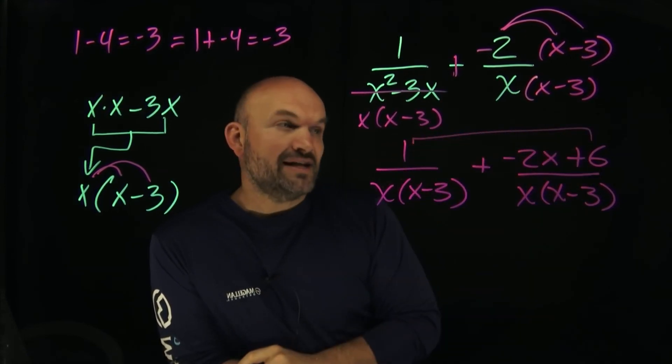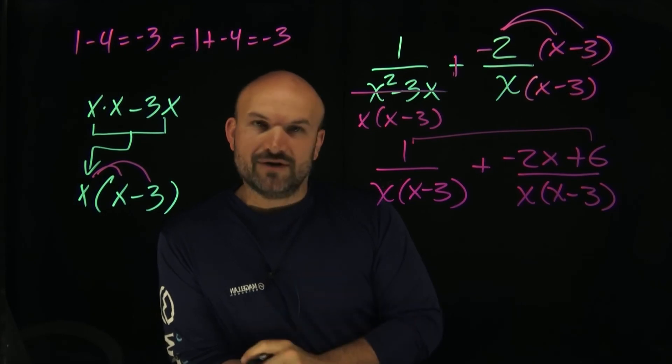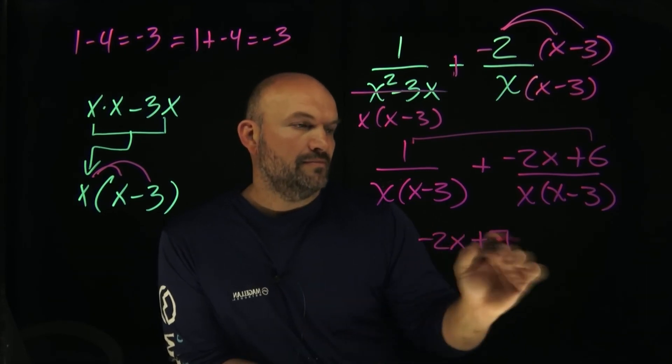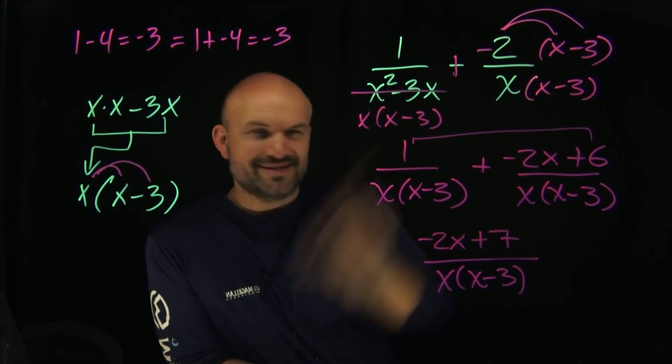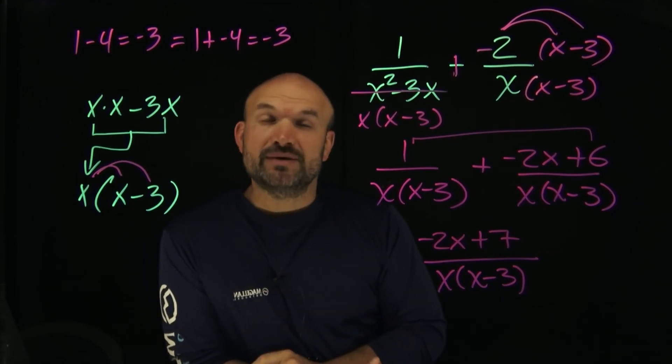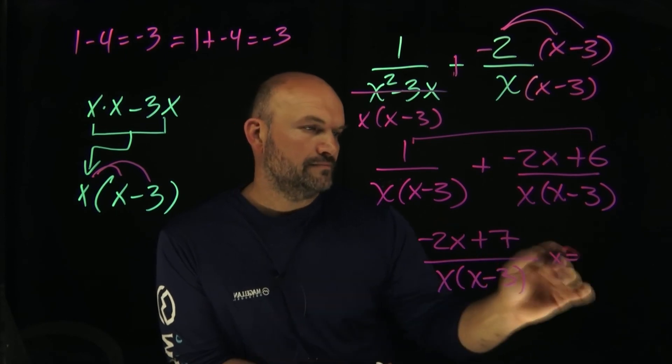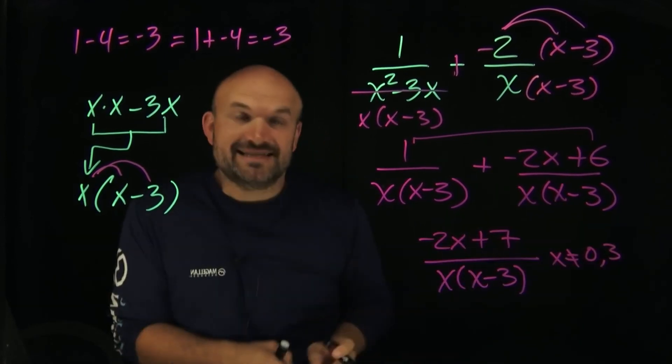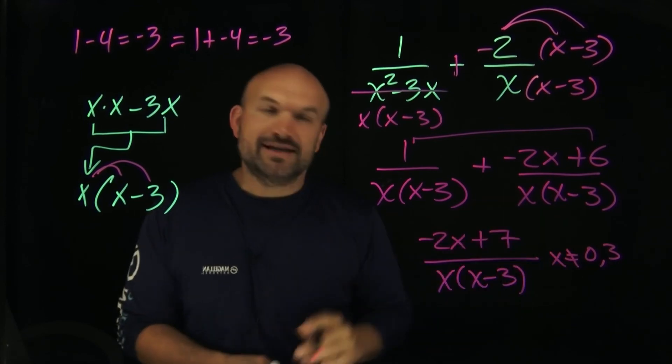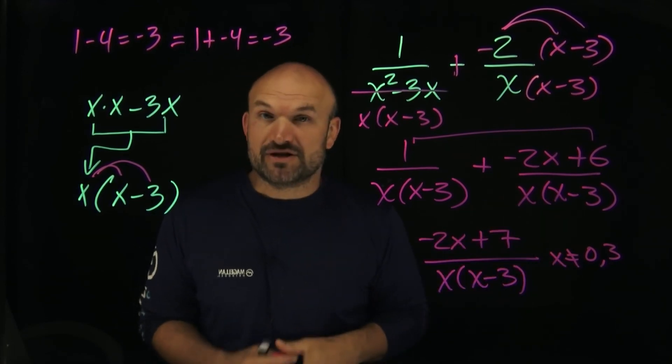That gives me a final answer of negative 2x plus 7—sorry, 1 plus 6 is 7—all over x times (x minus 3). We also want to make sure we include our excluded values. Those are the values that make my denominator equal to 0. You can see if I plug those numbers in for x in the denominator, they would make them 0. That's why they are excluded from the domain of this expression.